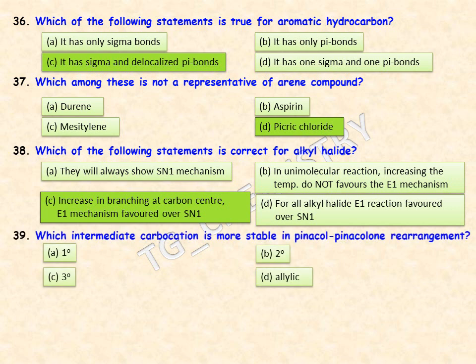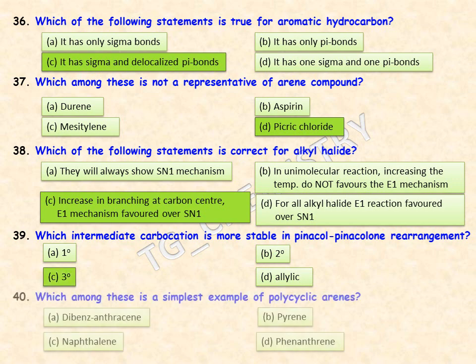Which carbocation intermediate is more stable in the pinacol-pinacolone rearrangement? Options are primary, secondary, tertiary, or allylic. Option C is the right answer: in pinacol-pinacolone rearrangement, the tertiary carbocation is more stable compared to the others.